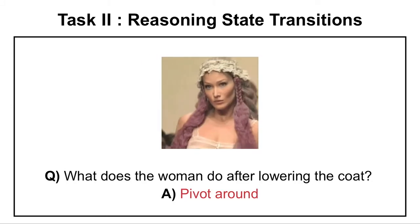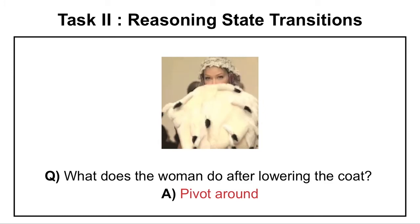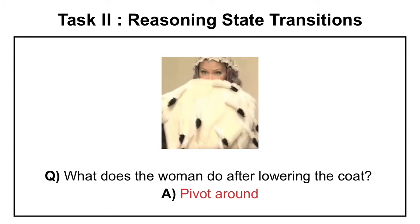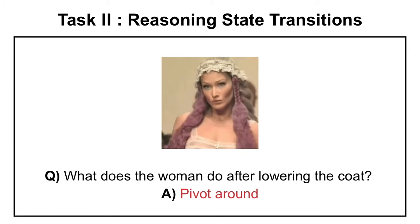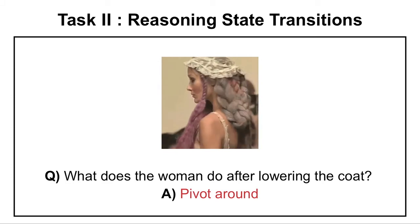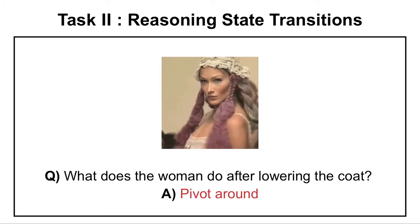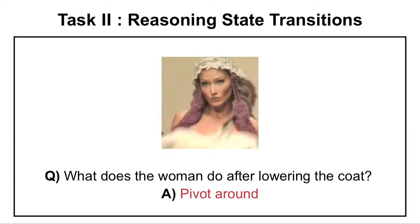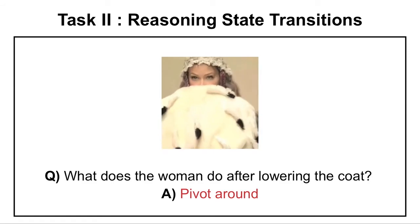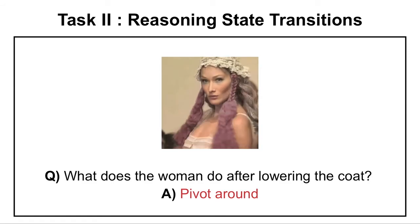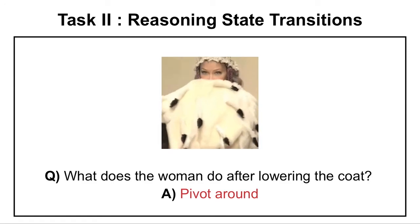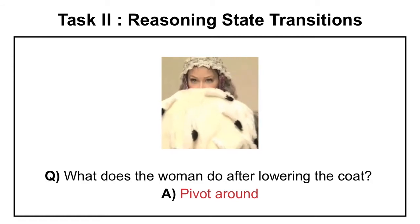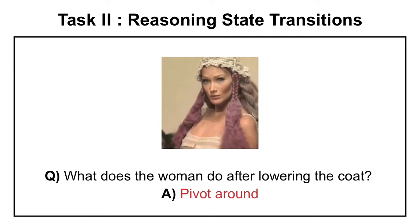Here is another task. In this task, the system needs to track the state transitions of objects and actions. For example, given this video and the question — what does the human do after lowering the coat — the system will have to understand that this human first lowered the white coat and then pivoted it around.